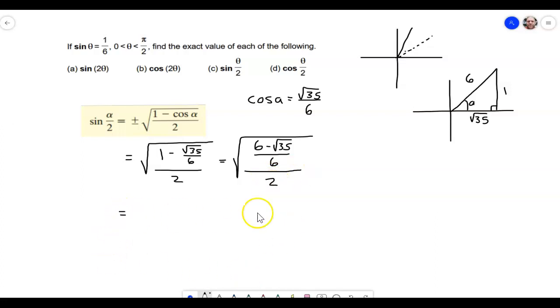And coming down here, I can multiply by the reciprocal of the denominator. So instead of dividing by 2, I can multiply by 1 half. So that is going to give me 6 minus the square root of 35 all over 12. And then if you notice 12 is the product of a perfect square. So 4 is a perfect square. So I can actually rewrite it like this: square root of 6 minus square root of 35 like this.